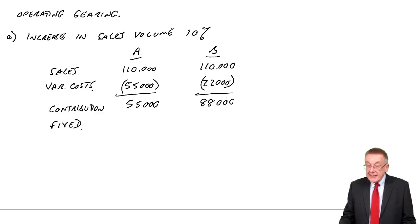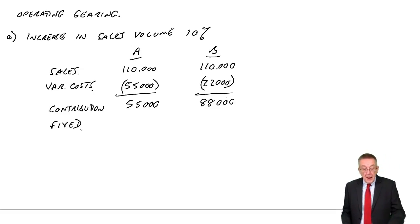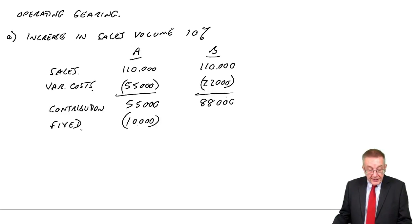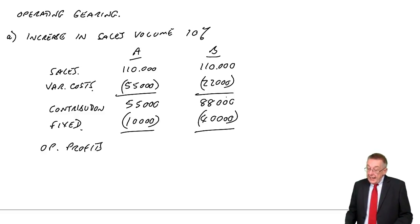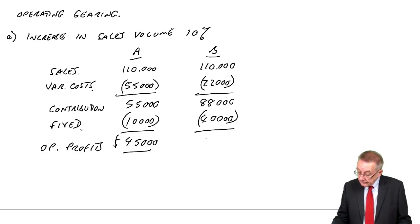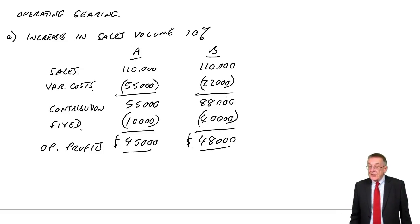They've both got fixed costs, of course, but by definition, the fixed costs will stay fixed whatever happens to the volume. In the case of A, the fixed costs will be £10,000. In the case of B, they'll remain at £40,000. Therefore, the operating profits are A, £45,000, B, £48,000. So in both cases, higher sales volume, we sell more units, obviously we end up with more operating profit.